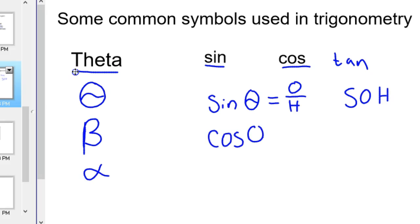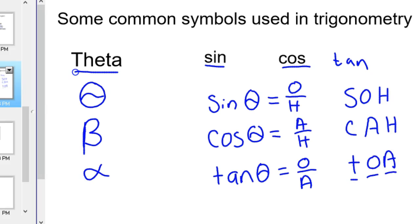Consequently, we write cosine theta equal to adjacent over hypotenuse. That's the CAH. And then tangent is the last one. So, tangent of your angle is opposite over adjacent. So, that's the TOA part. Tangent is opposite over adjacent.